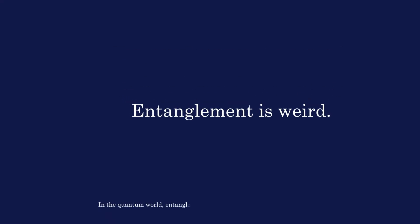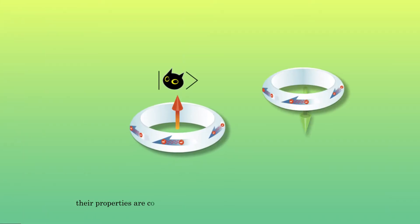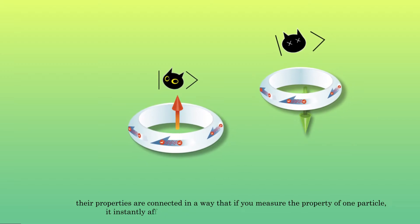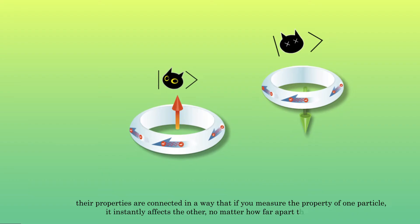In the quantum world, entanglement works somewhat similarly, but it's even more peculiar. When two particles become entangled, their properties are connected in a way that if you measure the property of one particle, it instantly affects the other, no matter how far apart they are.